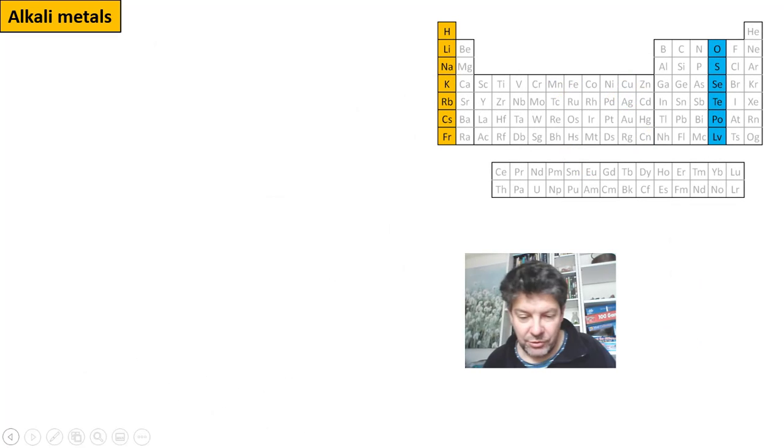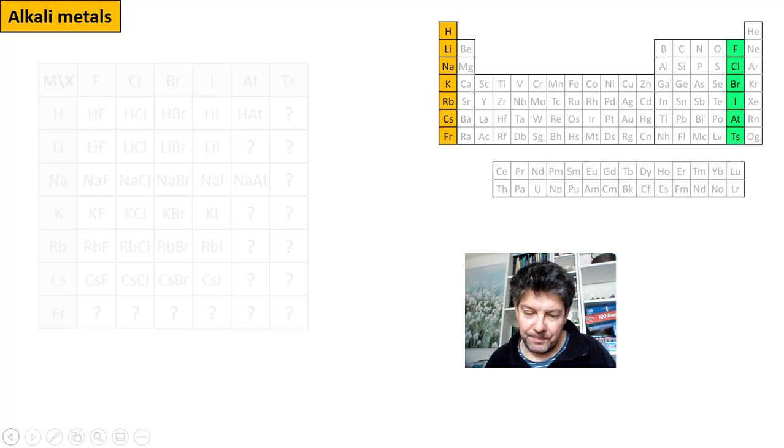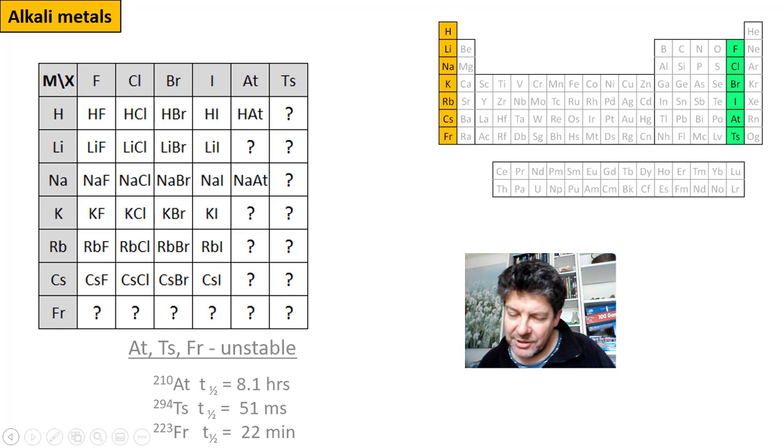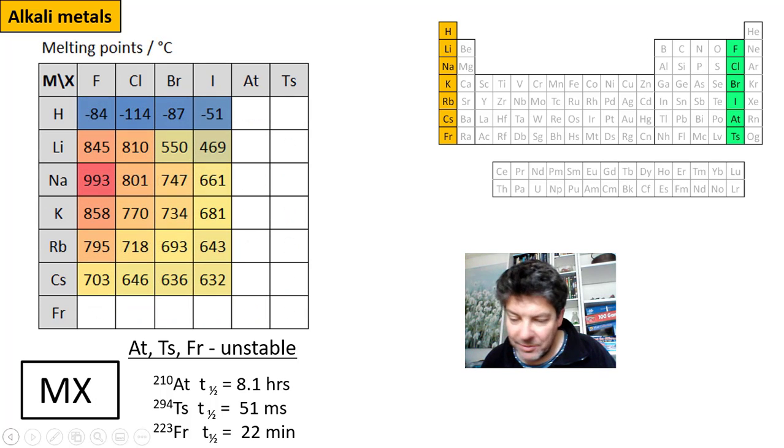While we are taking this approach, let's look at the binary compounds formed between alkali metals and the group 17 elements. Again, there are some unknowns here. Astatine, tennessine and francium are all too unstable to do much traditional chemistry with. But those that are known all form compounds with a one-to-one stoichiometry. Again, if we look at the melting points of these compounds, those with hydrogen are very low.